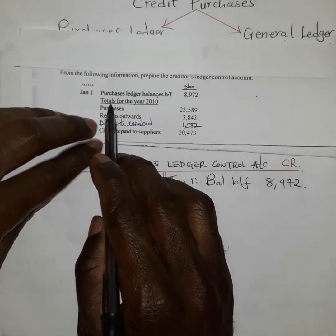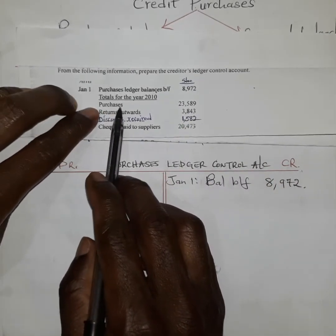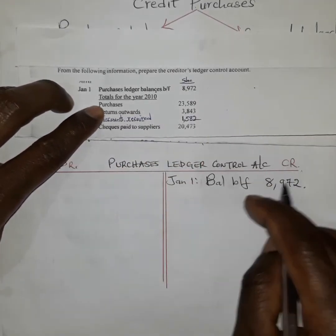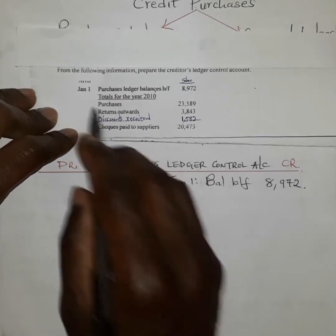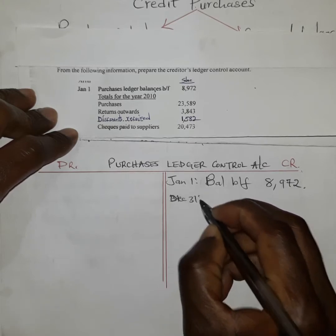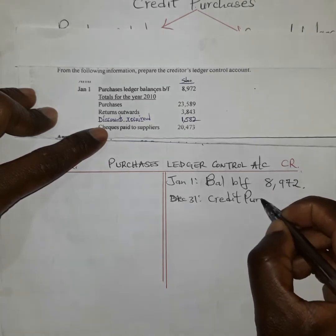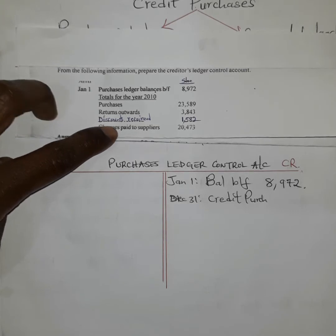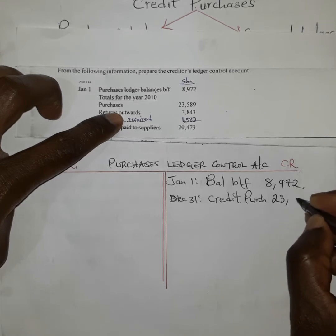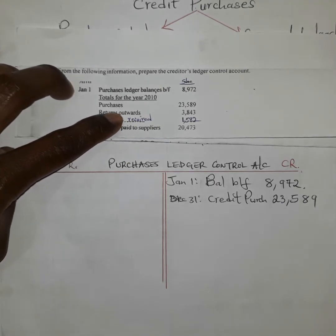Next, we have totals for the year — credit purchases. These are credit purchases, which means they are increasing what the business is supposed to pay, and therefore they are credited. So on December 31st, we record credit purchases and credit the amount of 23,589.